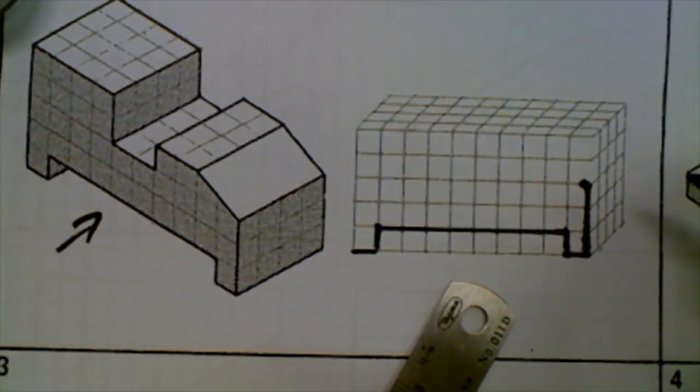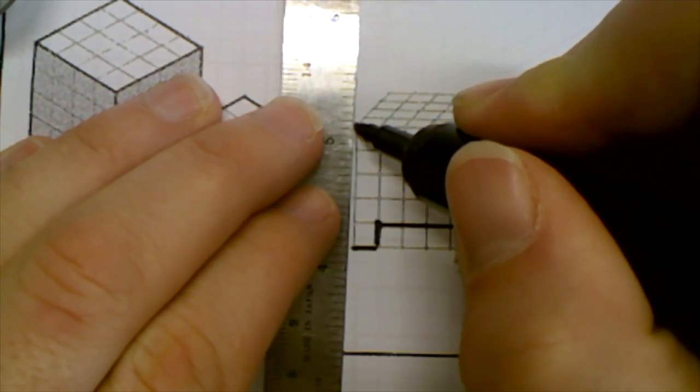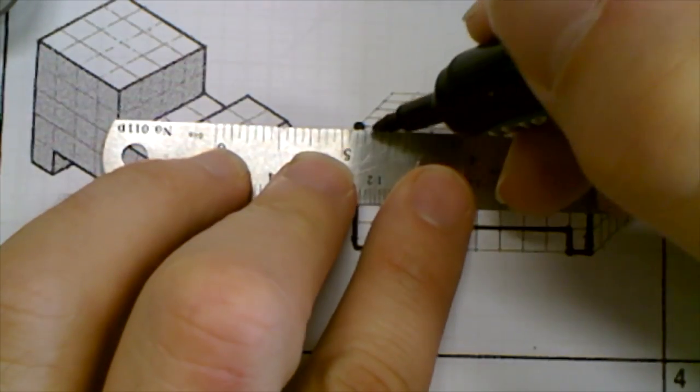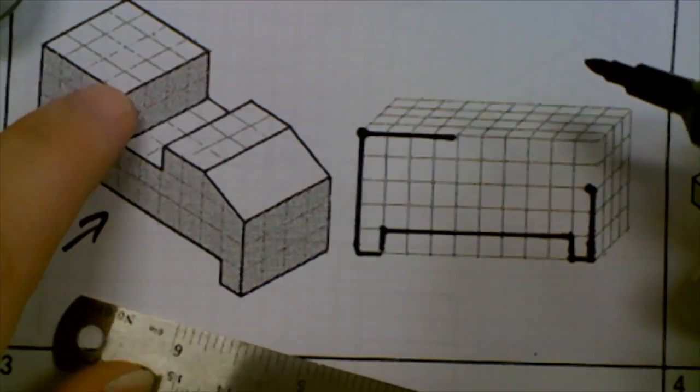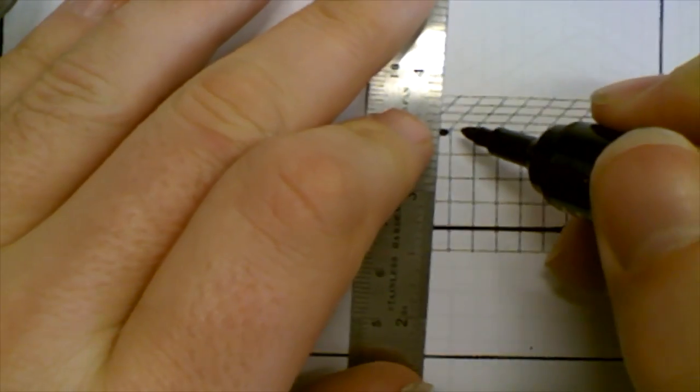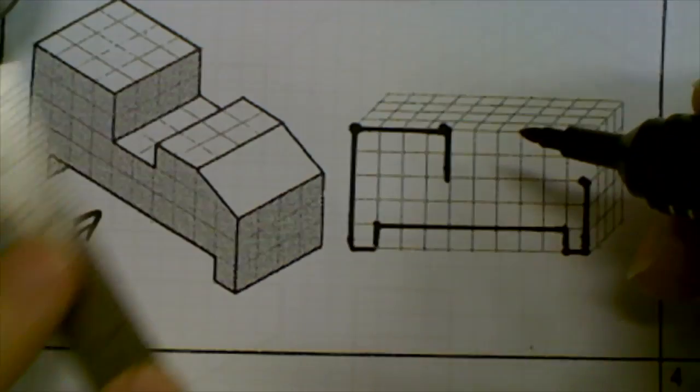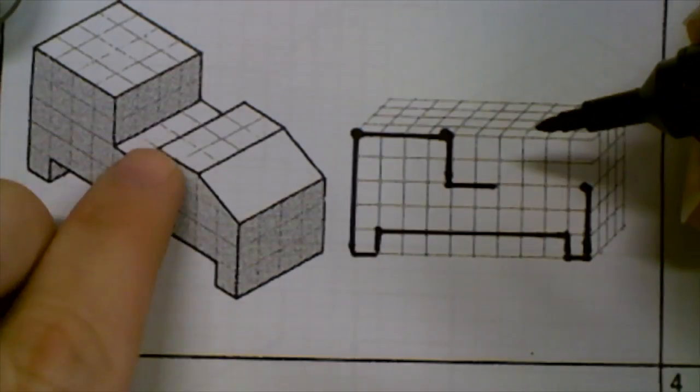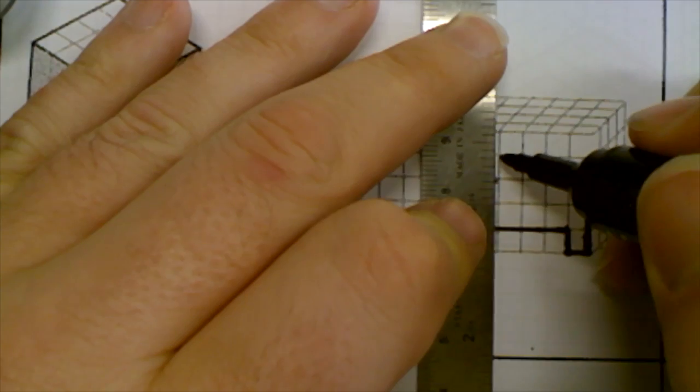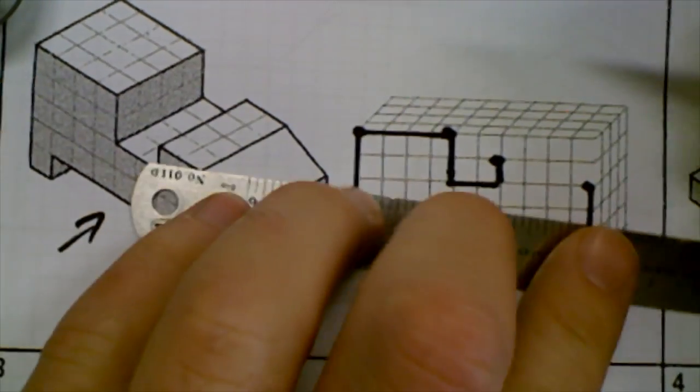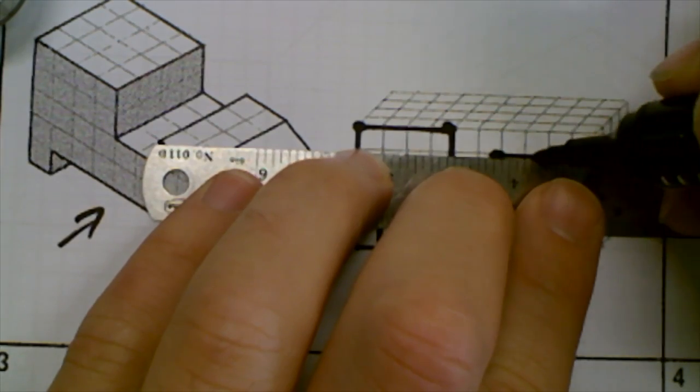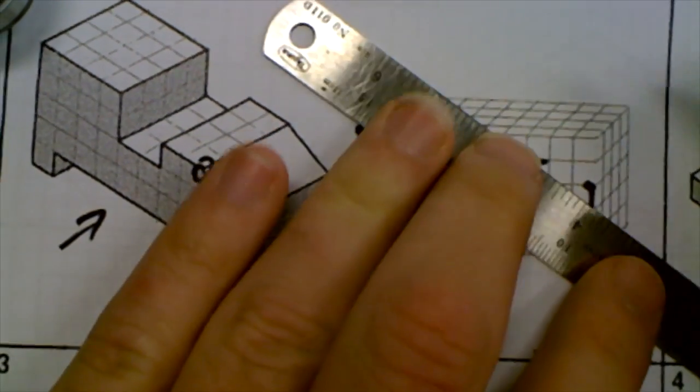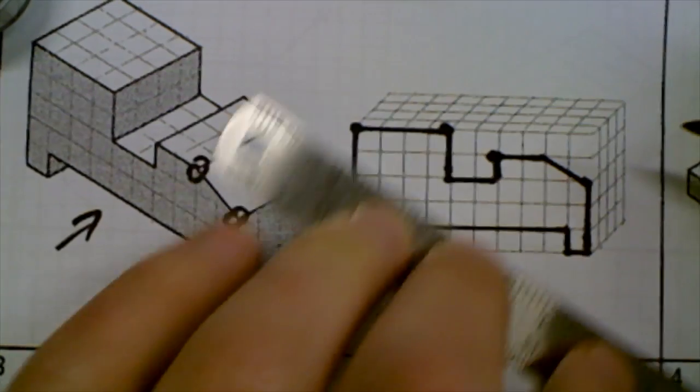At the back we've got one, two, three, four, five, so we go five blocks up. One, two, three, four blocks across. Two blocks down. Two blocks across. One block up. Now I've got the start point and the end point of my angle, so I can just draw that in. And that's my front view done.